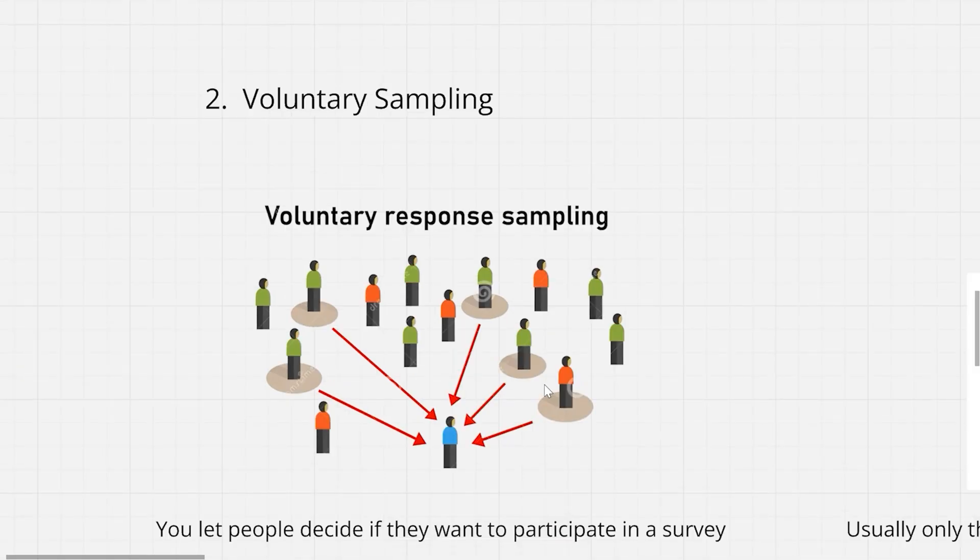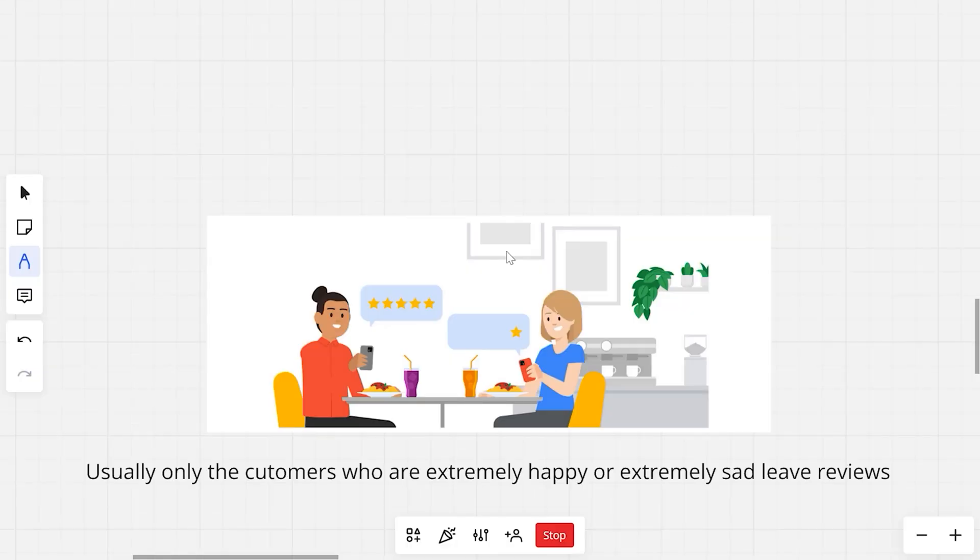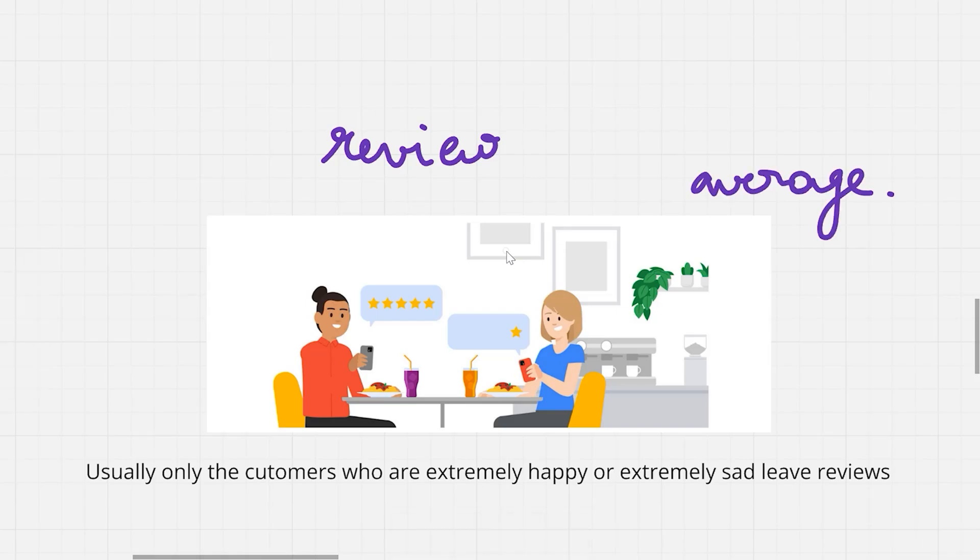The next one is voluntary sampling. Voluntary sampling is when you let people decide if they want to participate in a survey or study. Instead of choosing who to ask, you wait for volunteers to step in. The problem here is that you often end up hearing only from people who feel strongly about the topic, not everyone. Say for example, a company sends an email asking customers to leave a review. Most of the customers who are going to reply to that email are either going to be really happy with the product or not satisfied at all with the product. The company is barely going to receive any average reviews because these are the customers who are not going to bother responding.